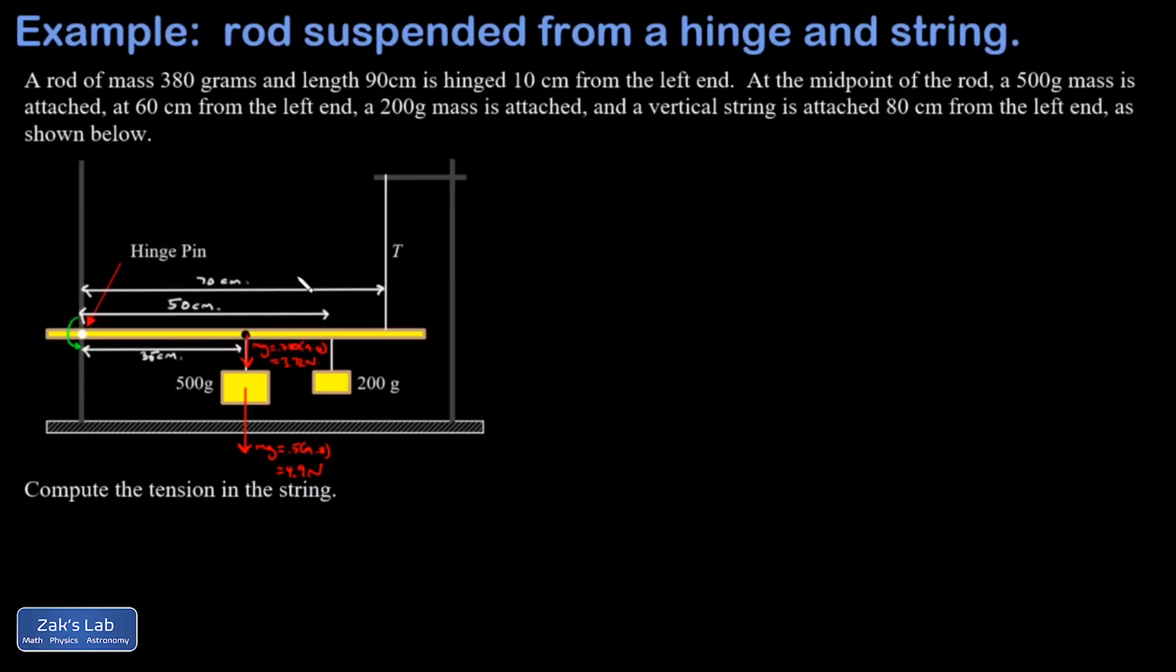There's a couple things to wrap up here. I have the weight of the 200 gram mass. That's going to be 0.2 times 9.8 or 1.96 newtons. And finally the thing I'm looking for, the tension exerts an upward force through a lever arm of 70 centimeters.